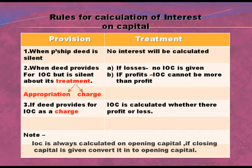In that case, IOC is calculated on opening capital. If closing capital is given, convert it to opening capital. If fluctuating partner's capital is given, then to convert closing capital into opening capital, we have to add drawings and interest on drawings, and deduct interest on capital, additional capital, and profit shared by the partners. If these amounts are added and deducted from the closing capital, we can arrive at the balance of opening capital.